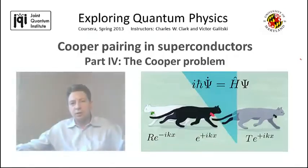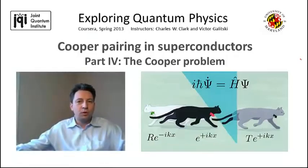So in this final part of the lecture, I will solve the Cooper problem, which is a problem of weakly attractive electrons near the Fermi surface that form pairs, so-called Cooper pairs, bound states of two electrons.